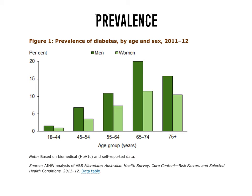Looking at the prevalence of diabetes by age and sex, males dominate across all age groups. The prevalence of males is quite alarming in the 65 to 74 age group — it's almost double — and that is concerning.